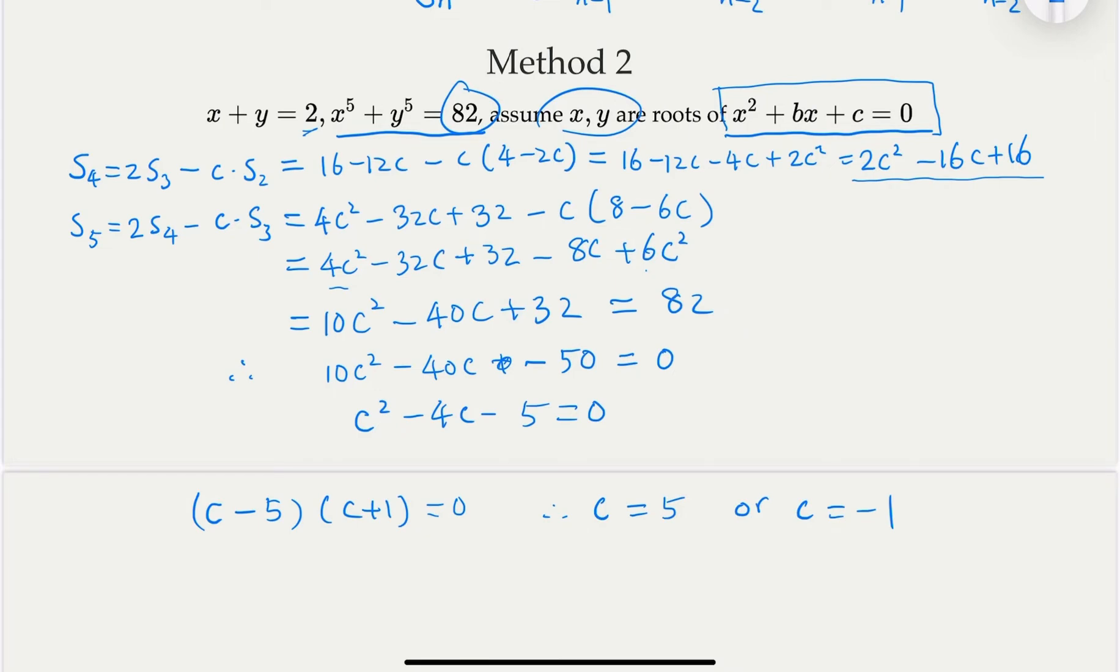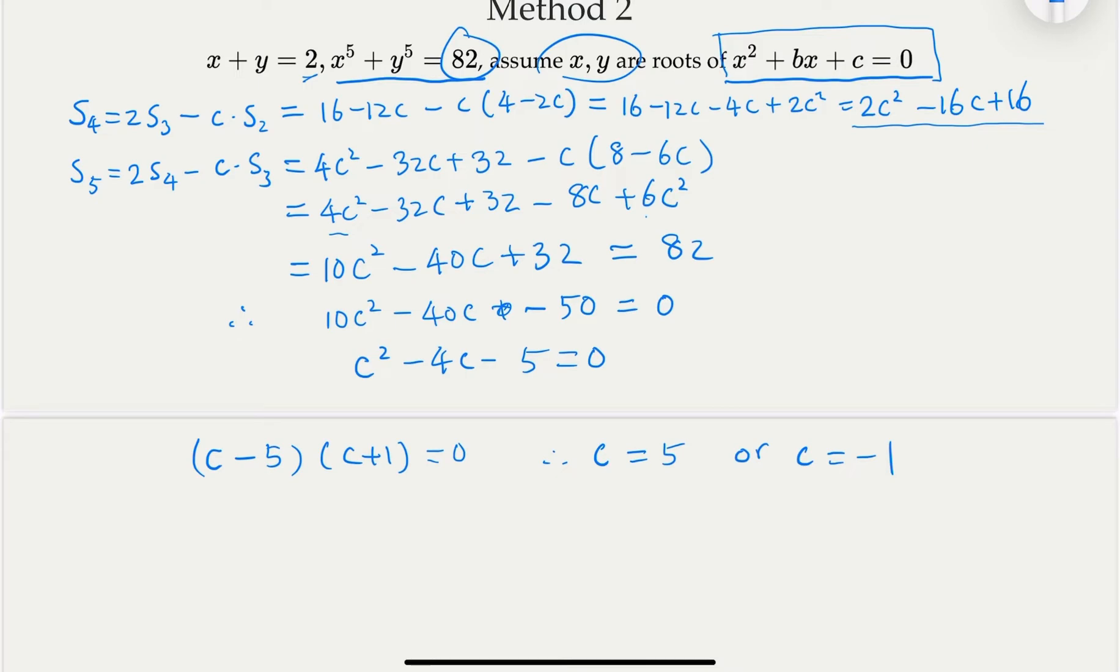B is negative 2. So in other words, the equation we're facing is x squared minus 2x plus c. We have two choices. Either this one or 4, x squared minus 2x minus 1 equal to 0.